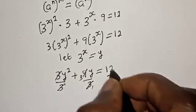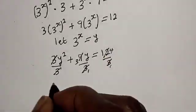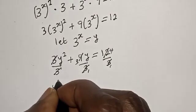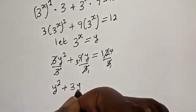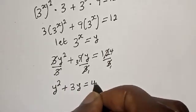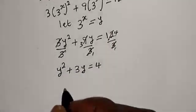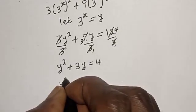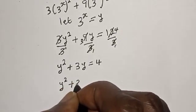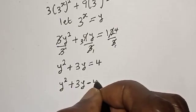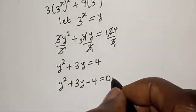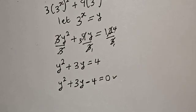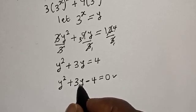After dividing through by 3, we have y squared plus 3y is equal to 4. Bringing 4 to the left side gives y squared plus 3y minus 4 is equal to 0. This is a quadratic equation and we can solve it using the factorization method.